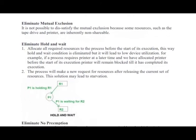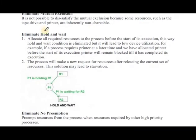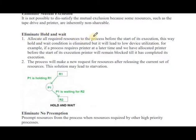Next, eliminate hold and wait. Here R1 is a resource, R2 is a resource, and P1 is holding R1 while waiting for R2. Such a condition should be avoided to eliminate deadlock. To do this, allocate all resources to the process before the start of its execution. This way, the hold and wait condition is eliminated.